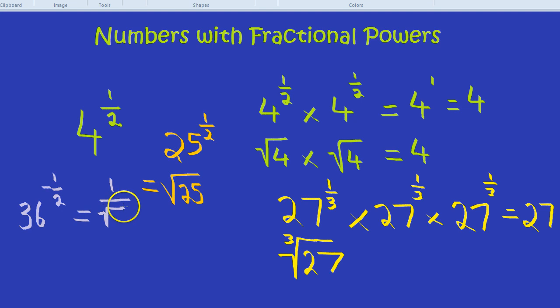So we have 1 over the square root of 36. And the square root of 36 is 6. So it's 1 over 6 is the answer, 1 sixth.